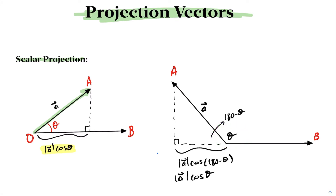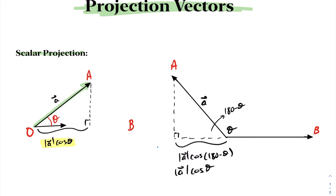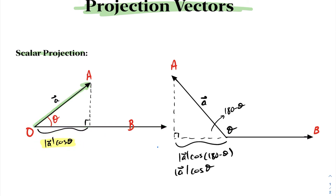Furthermore, notice this operation is independent of the length of vector B. If my vector B was smaller, the projection of A onto B would still be the magnitude of A cosθ. And if my vector B was much longer, the projection of A onto B would still be the magnitude of A cosθ. Therefore, the scalar projection of A onto B is independent of the length of vector B.